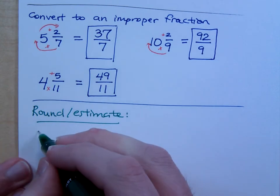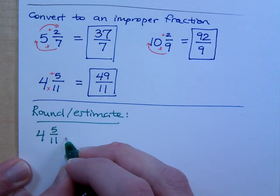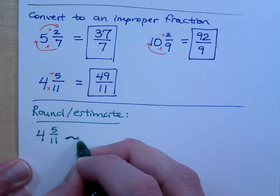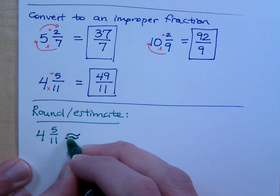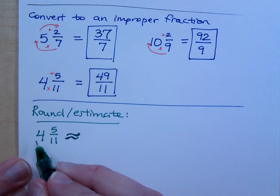So round slash estimate. Look at the last number that I had, 4 and 5 elevenths. This is approximately, whoops. It was a little squiggle equal size to be approximately equal to. Is this closer to 4 or 5? How do you know?